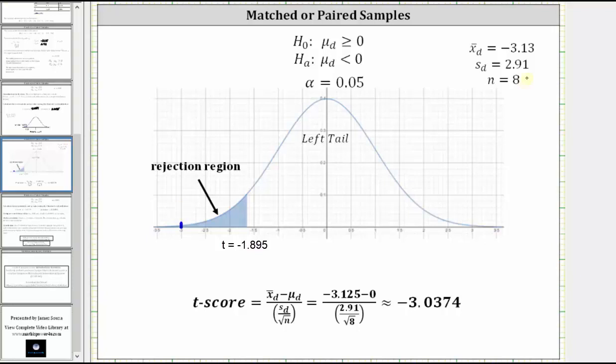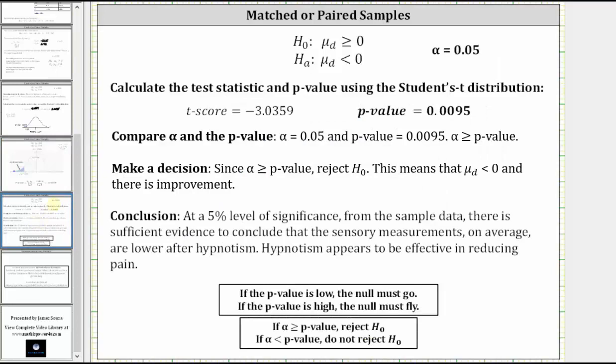But let's also draw the same conclusion comparing alpha and the p-value. So comparing alpha and the p-value, notice how the p-value is low compared to alpha. And when the p-value is low, the null must go. Or more formally, because the p-value is less than or equal to alpha, or because alpha is greater than or equal to the p-value, we reject the null hypothesis.